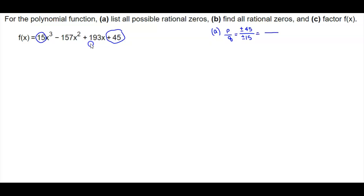What are all the factors of 45? The factors of 45 are plus or minus 1, plus or minus 3, plus or minus 5, plus or minus 9, plus or minus 15, and plus or minus 45. Now the possible factors of plus or minus 15 are plus or minus 1, plus or minus 3, plus or minus 5, and plus or minus 15. Now we need to consider all the possibilities of this fraction p over q.